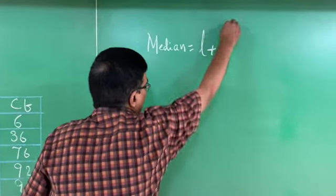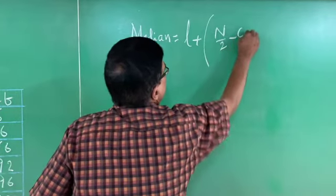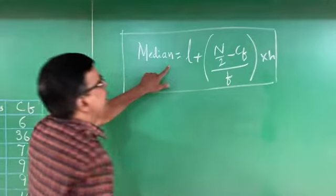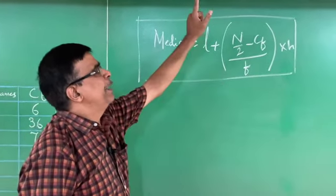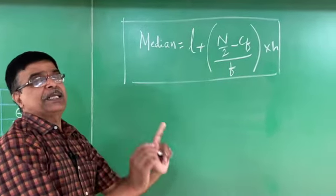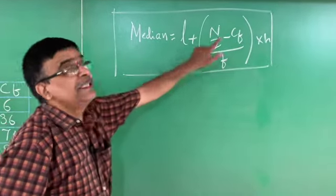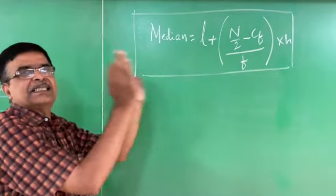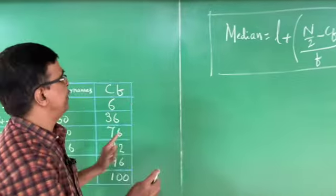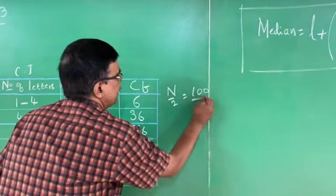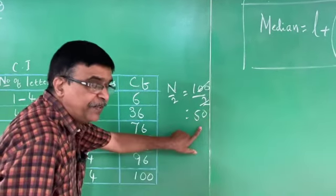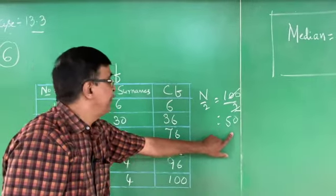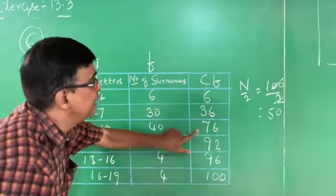The formula is Median = L + [(N/2 − CF) / F] × H. N = 100, so N/2 = 100/2 = 50. Observing the CF column: 6 is not there, 36 is not enough... This 50 lies at the class interval 7 to 10, since CF jumps from 36 to 76. Therefore the median class is 7 to 10.